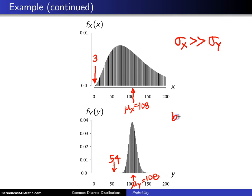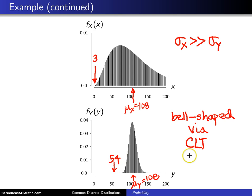Another thing to notice is that the second distribution in particular is bell-shaped, and it is bell-shaped by something known as the central limit theorem, which is covered in the last chapter of the book. Basically, as your r value — which in this case is 54 — gets larger and larger, the distribution becomes more and more bell-shaped. For r equals 3, it is quite skewed. But once you get r equal to 54, it has a pretty symmetric bell-shaped distribution — not completely symmetric, since it cuts off at 54 with no mass below, while the right tail extends to infinity.